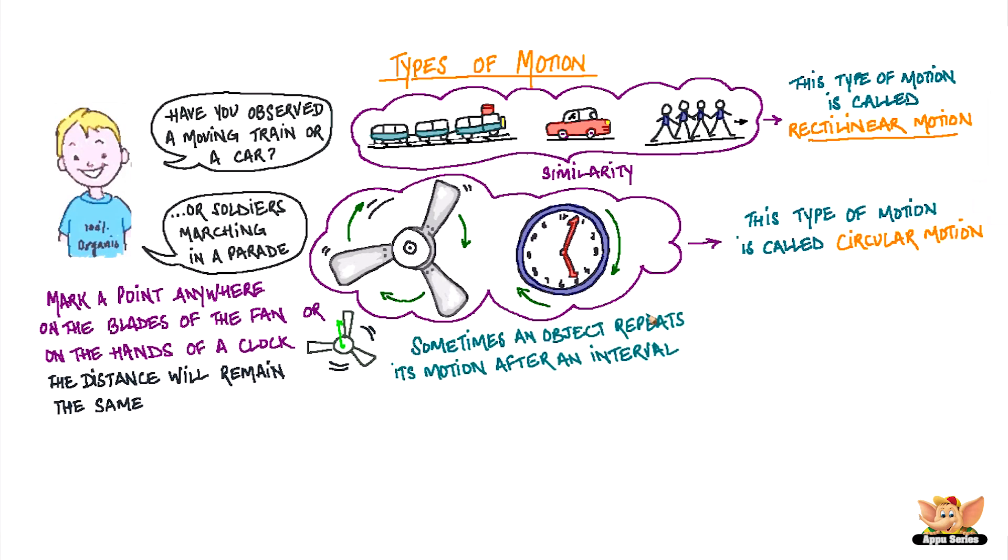Sometimes an object repeats its motion after an interval. This kind of motion is called periodic motion. Take a neck chain with a heavy pendant and let the pendant hang. Now pull the pendant to one side and release. The pendant will move to and fro for a long time. This is a pendulum.